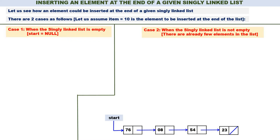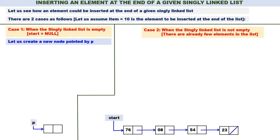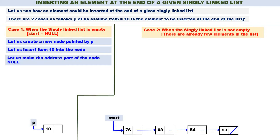Let us concentrate on Case 1. The linked list is empty, therefore you have to create a new node. We shall create a new node pointed by P. We have created a new node pointed by P, and item 10 should go into the node. Let us insert item 10 into the node. The address part of P should become equal to null. Let us make the address part of the node null.